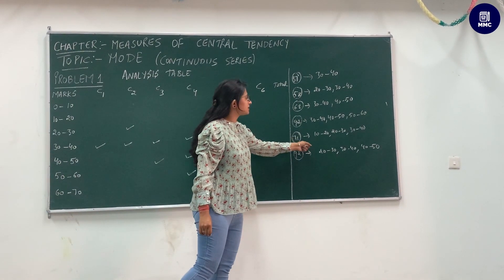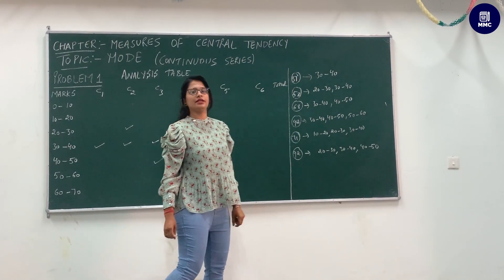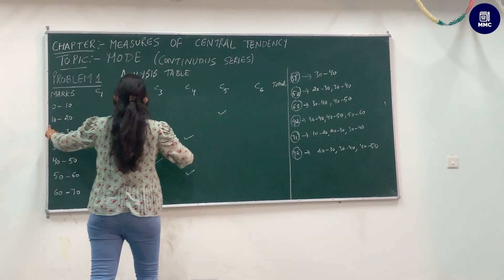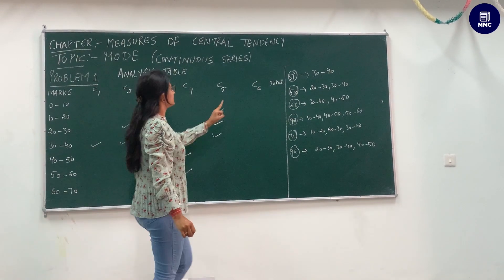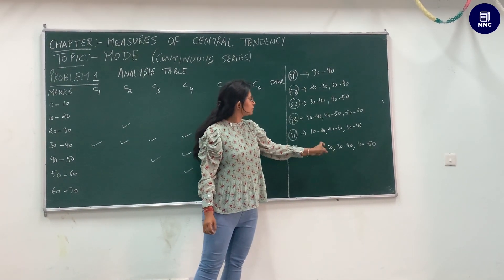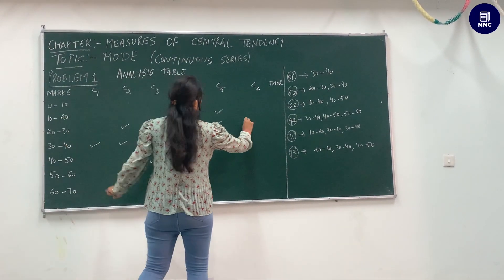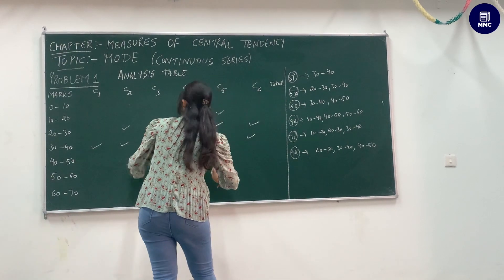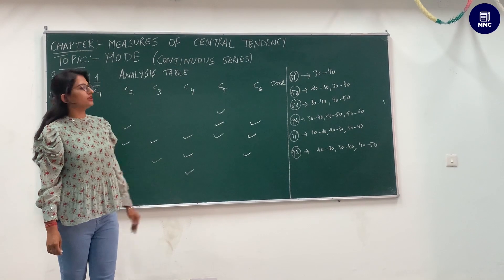In column five, the highest frequency was 71, corresponding to 10–20, 20–30, and 30–40, so put a tick in front of each. In column six, the highest frequency was 89, corresponding to 20–30, 30–40, and 40–50, so put a tick in front of each of those.